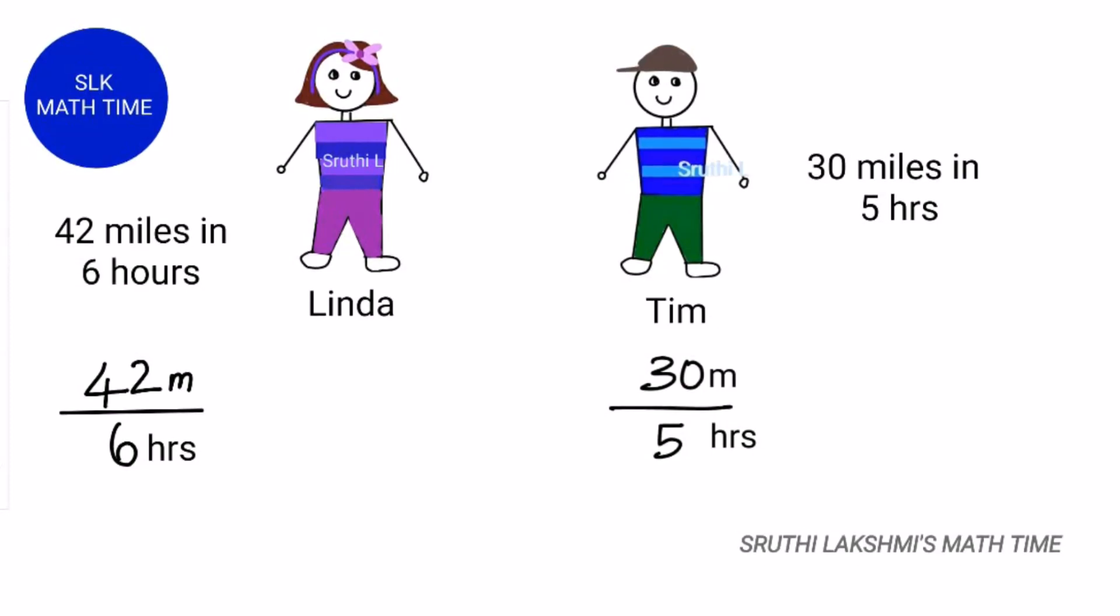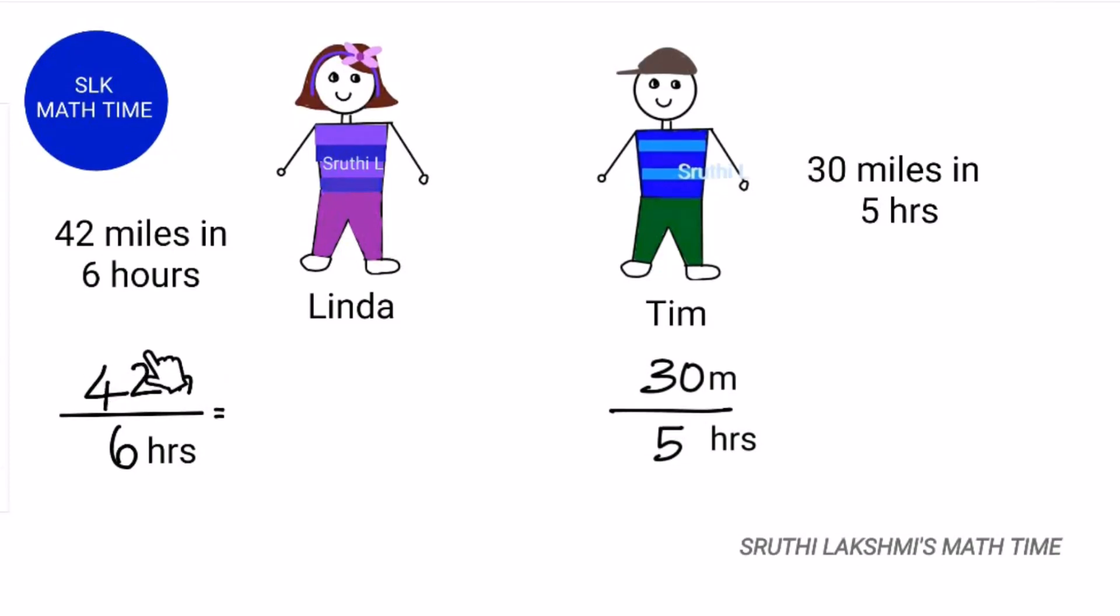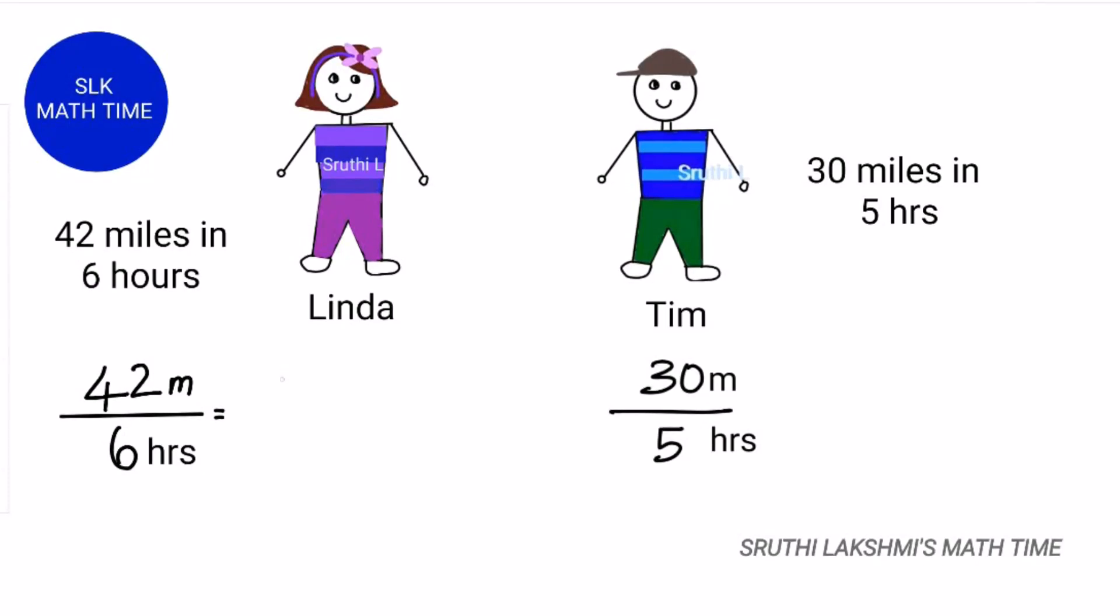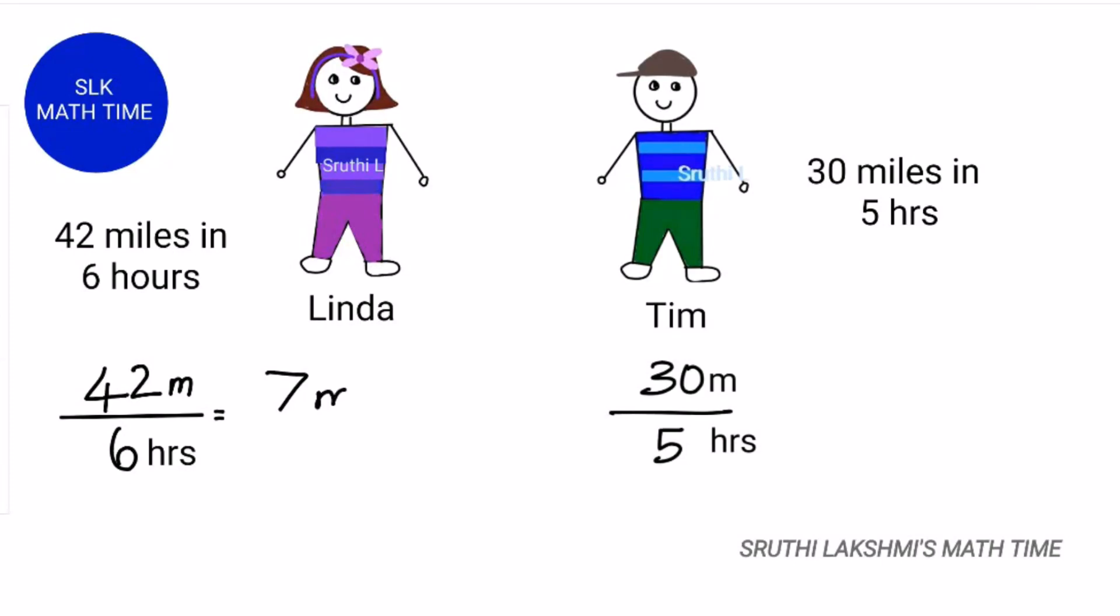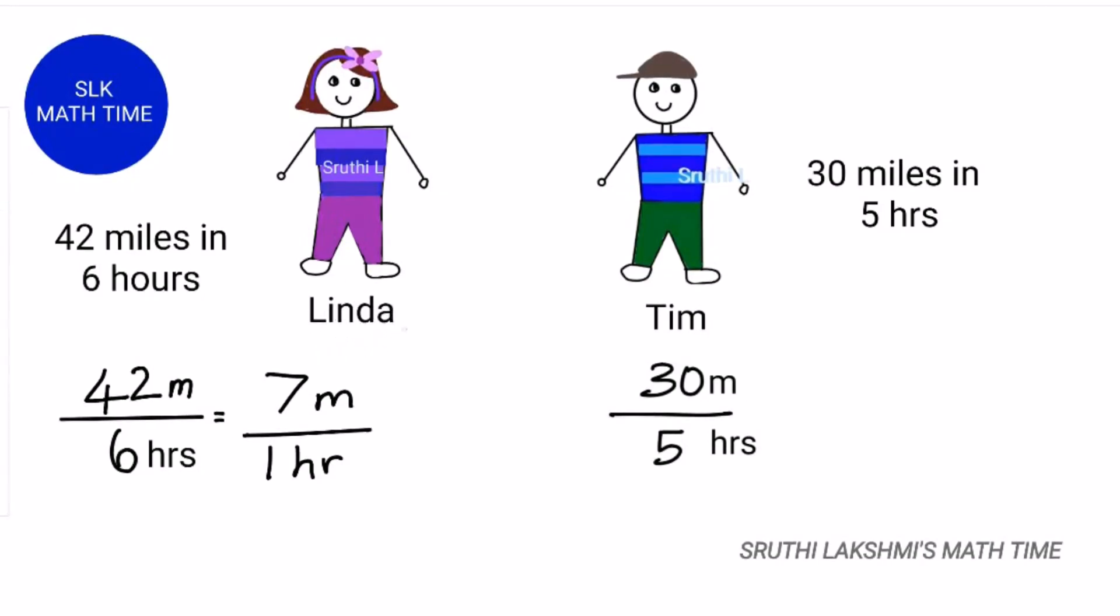In order to convert a fraction into a unit rate, we have to divide the numerator by the denominator. So 42 divided by 6. 42 divided by 6 is 7, and 7 can be written as 7 by 1. So Linda can jog 7 miles in 1 hour.